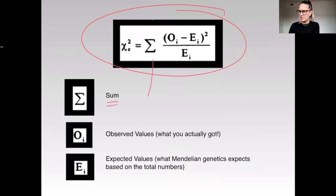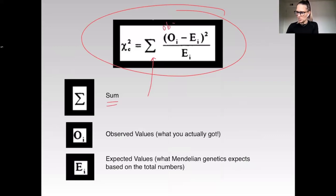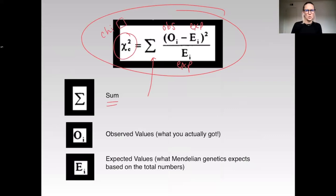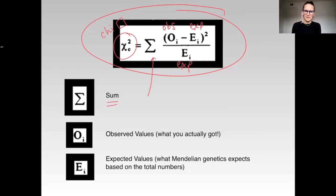This big sigma-looking symbol just means the sum. O is going to be your observed, and E is going to be your expected. This is our abbreviation for the chi-square, so the chi-square analysis is going to equal the sum of observed minus expected, squared, over expected.